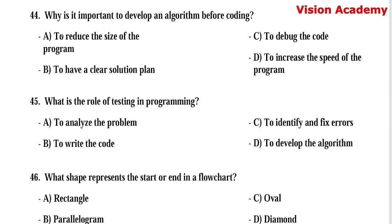Question number 44: Why is it important to develop an algorithm before coding? Option A, to reduce the size of the program. Option B, to have a clear solution plan. Option C, to debug the code. Option D, to increase the speed of the program. Here, option B, to have a clear solution plan, is the right answer.